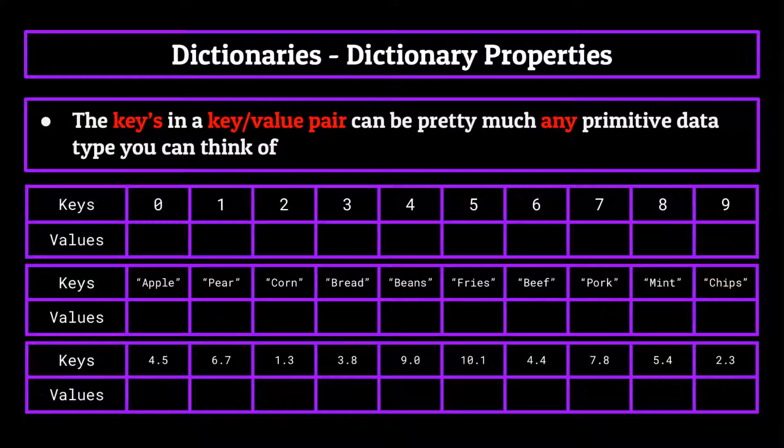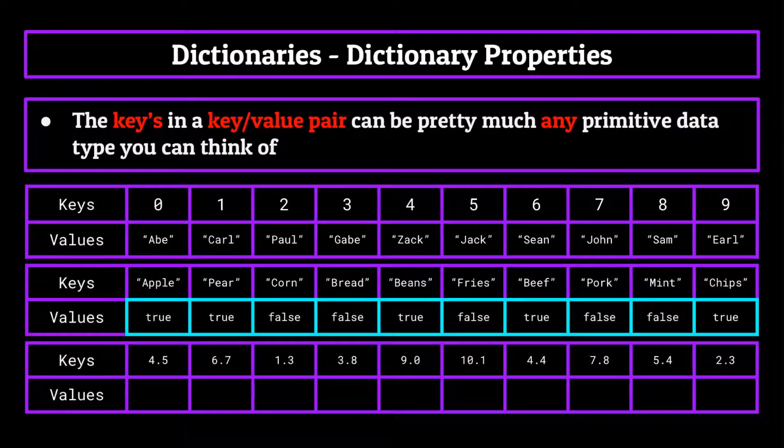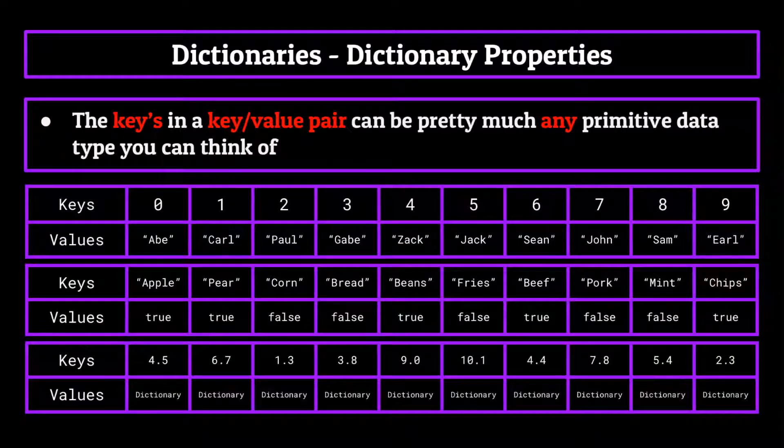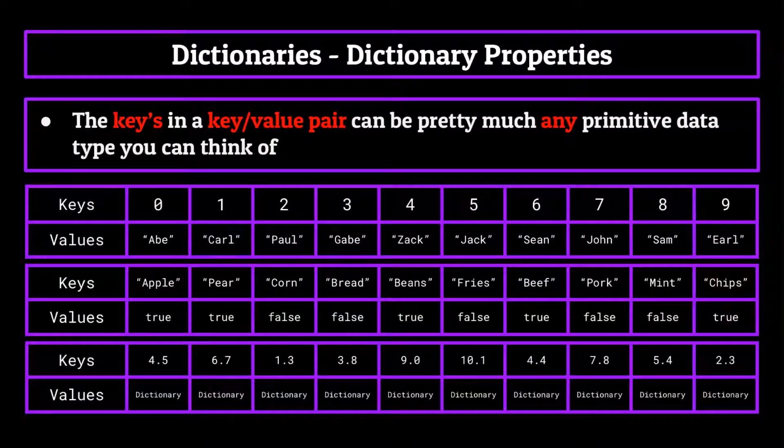As for the values, well, we have even more flexibility with those. We can have keys in a dictionary correspond to pretty much anything: strings, sure; booleans, of course; even another dictionary with its own set of key value pairs, you can actually do that as well. This allows us to have tons of combinations in the way that we store our data, which makes dictionaries very powerful.